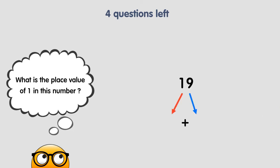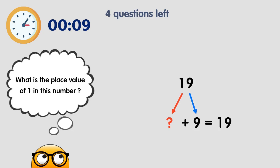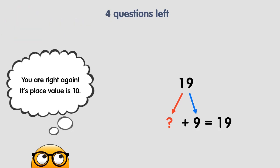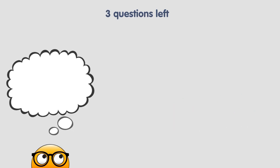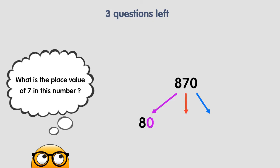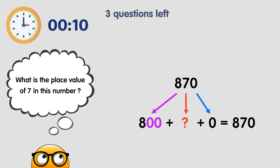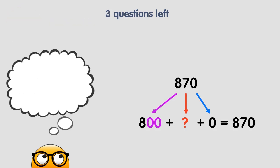What is the place value of 1 in this number? You are right again — the 1 has a place value of 10. What is the place value of 7 in this number? That's right — the 7 has a place value of 70.